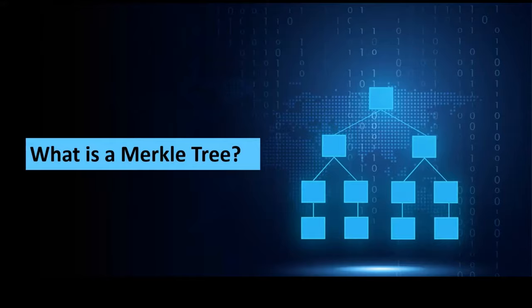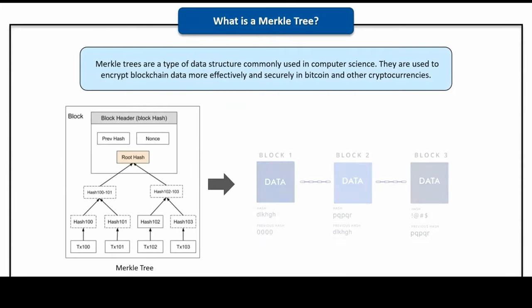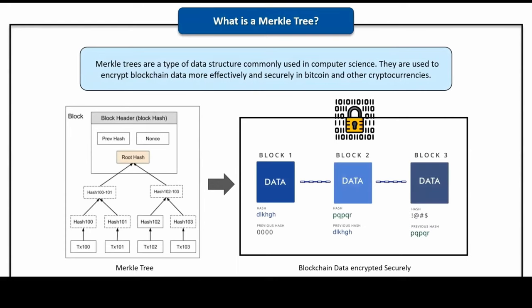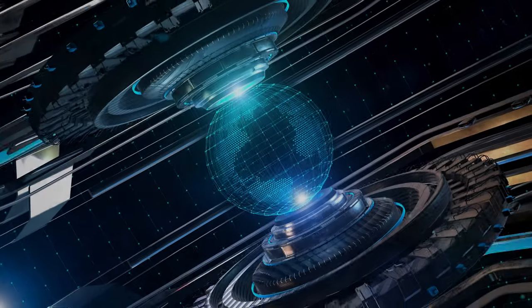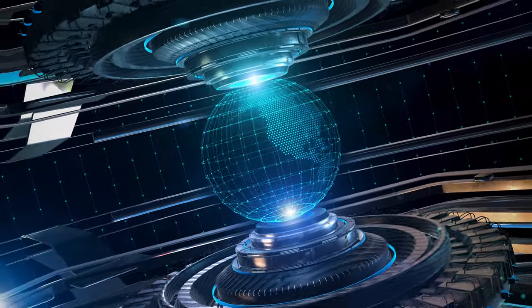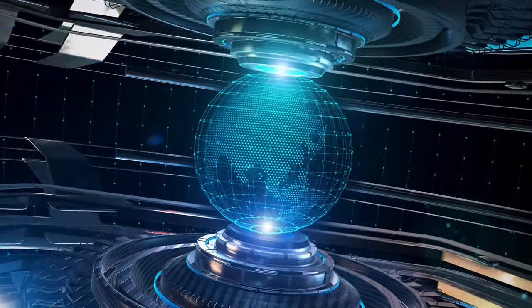What is the Merkle hash tree? In cryptography and computer science, a hash tree or Merkle hash tree is a tree in which every leaf node is labeled with the cryptographic hash of a data block, and every non-leaf node is labeled with the cryptographic hash of the labels of its child nodes. A hash tree allows efficient and secure verification of the contents of a large data structure. A Merkle hash tree is a generalization of a hash list and hash chain.